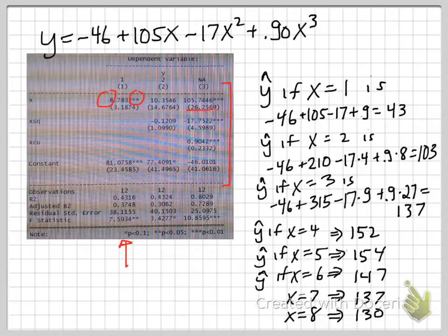So x is significant, x squared is significant, and x cubed is significant. We basically end up with a regression that looks like this: y equals minus 46 plus 105x minus 17.7x squared plus 0.90x cubed.